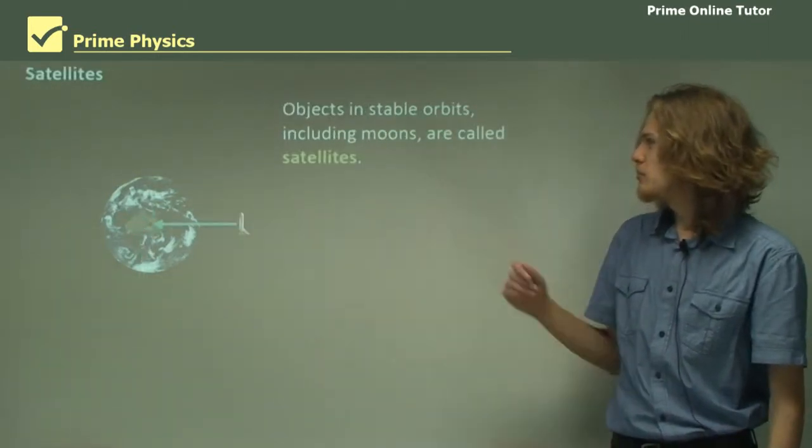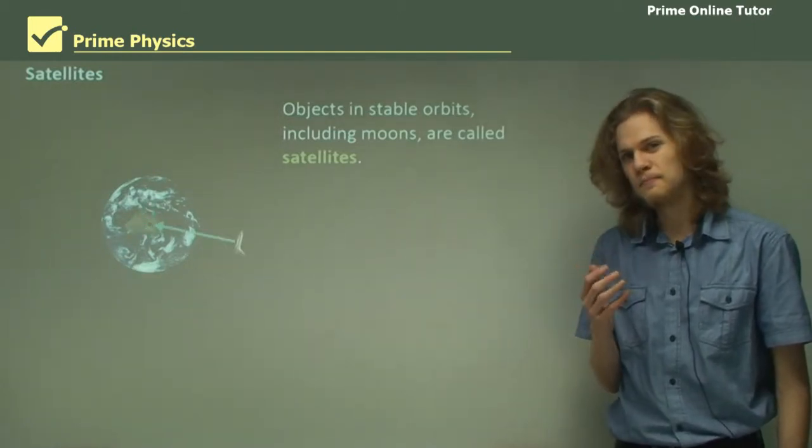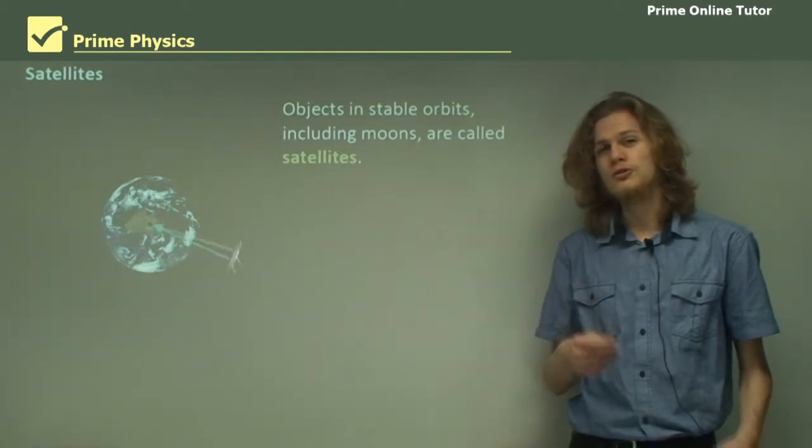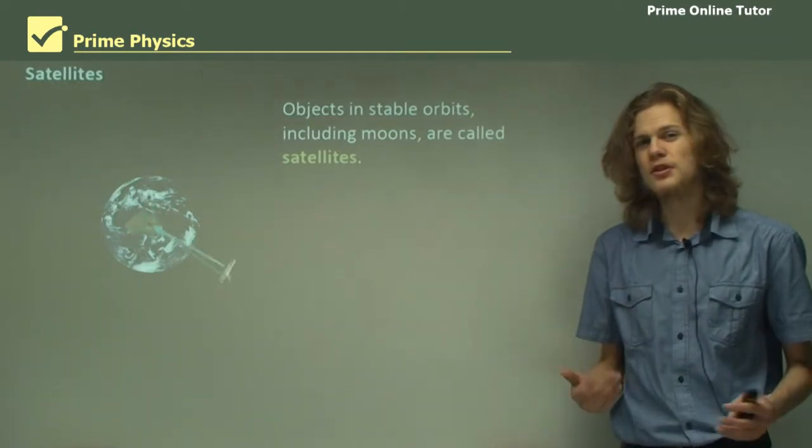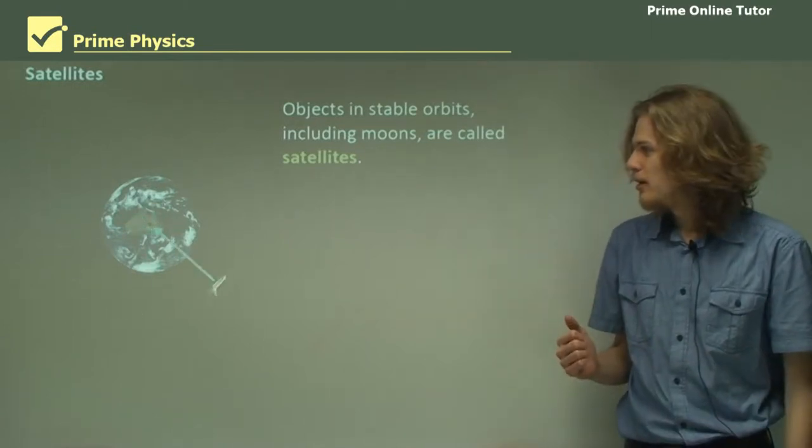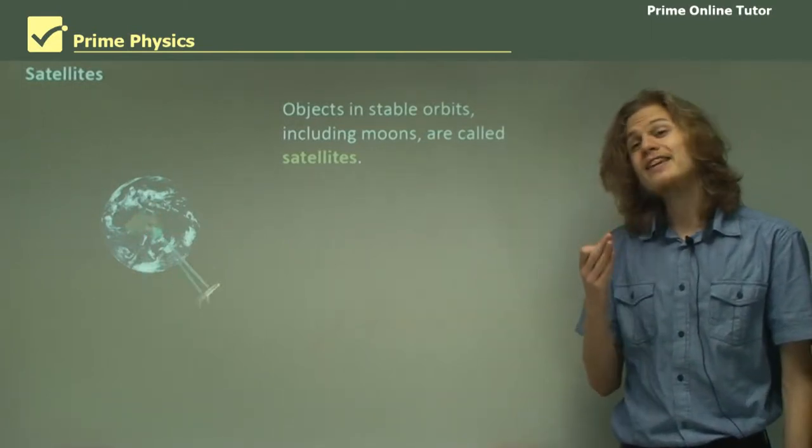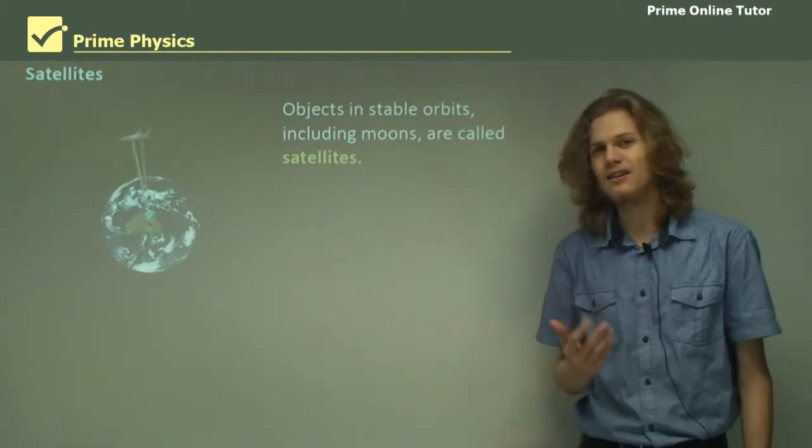Now objects in stable orbits, including moons, are called satellites. Normally we use the term satellite today to refer to an artificial satellite using things like radio broadcasting or other communications. But in a physical sense anything in orbit whether it's a space shuttle or a moon counts as a satellite.